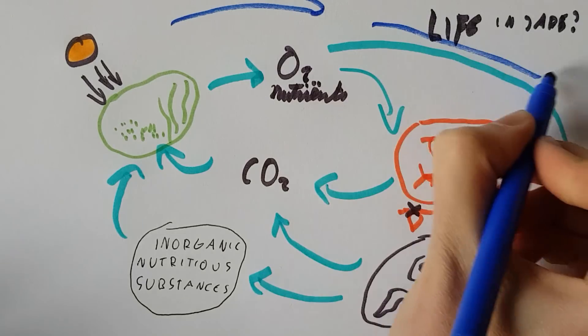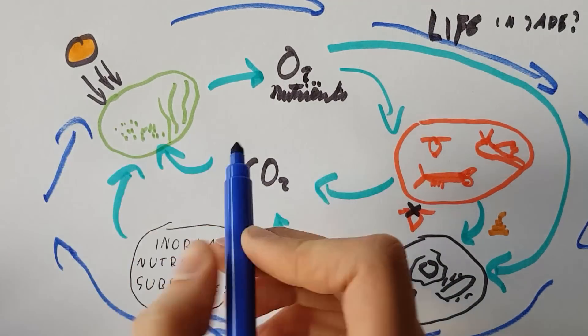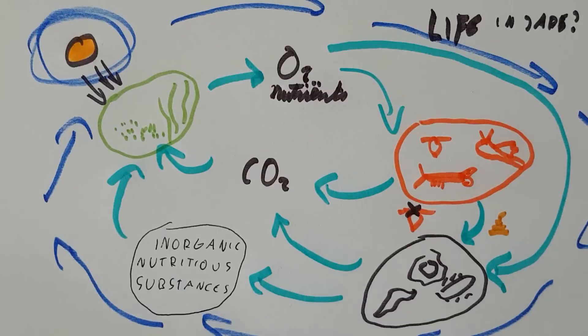So now we wind up with a complete cycle in the ecosphere. The only thing added from outside the jar is the energy from the sun in the form of light.